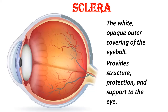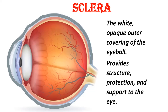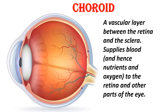Sclera: The white, opaque outer covering of the eyeball — it provides structure, protection, and support to the eye. Choroid: A vascular layer between the retina and the sclera that supplies blood, nutrients, and oxygen to the retina and other parts of the eye.